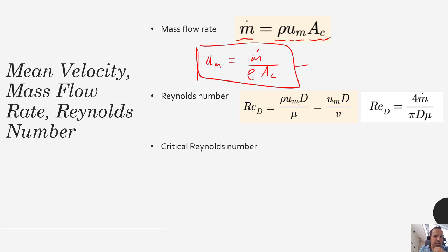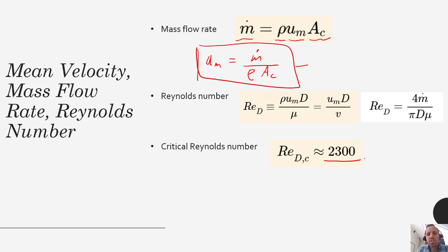The critical Reynolds number for flow over a flat plate was 5×10⁵ (500,000). For flow through a pipe, the critical Reynolds number for transition from laminar to turbulent is approximately 2,300. You may have seen 2,000 in other classes — we're in the same ballpark. This is an approximation, but it's the number we'll use in this class to characterize whether flow is laminar or turbulent.